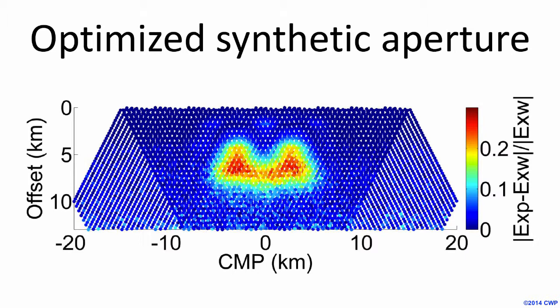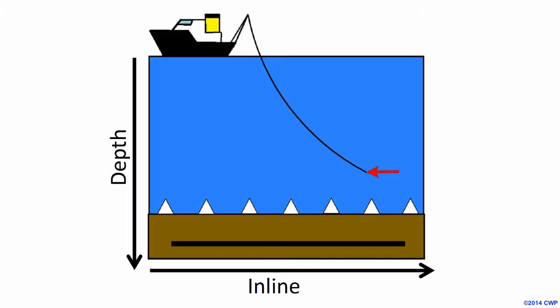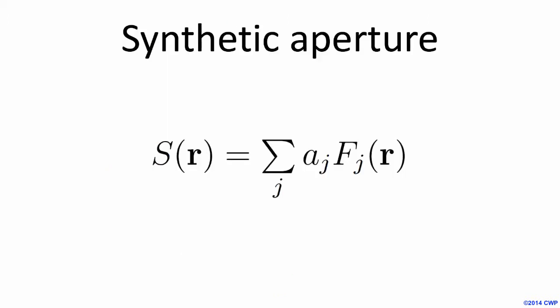I'll take you through how we apply optimized synthetic aperture to CSEM. First I'll introduce synthetic aperture, then I'll describe our optimization process, and finally I'll show you some results with synthetic data. The basic idea of synthetic aperture is to take multiple individual sources and add them together to create one large source. Because we're adding together multiple sources, we're able to weight them before summing to steer or focus the source in the inline, crossline, or both directions.